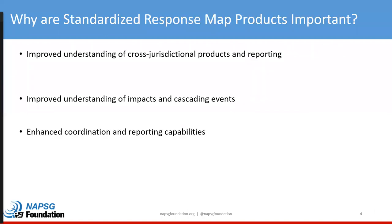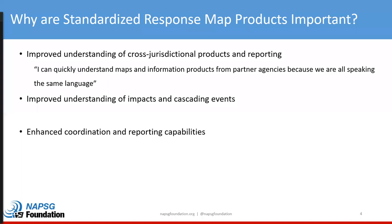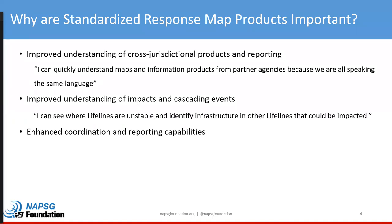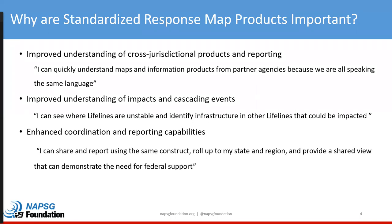Why are standardized response map products important? One is improved understanding of cross-jurisdictional products and reporting — I can quickly understand maps and information products from partner agencies because we are all speaking the same language. Another is improved understanding of impacts and cascading events — I can see where lifelines are unstable and identify infrastructure and other lifelines that can be impacted. Additionally, it can enhance coordination and reporting capabilities — I can share and report using the same construct, roll up to my state and region, and provide a shared view that can demonstrate the need for federal support.